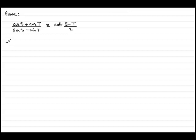So how do we prove this? We start off with the proof, and I would take the left-hand side because it's got two terms on the top and two terms on the bottom, which looks far more complicated than the right side. So we'll start with cos s plus cos t divided by sine s minus sine t.